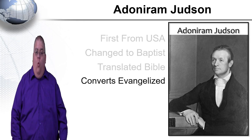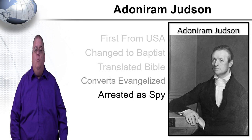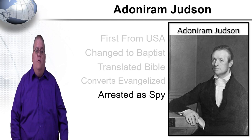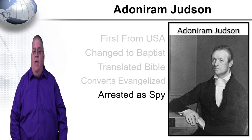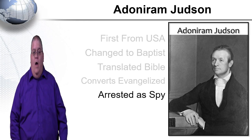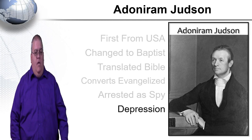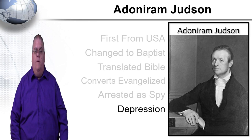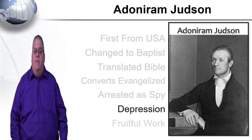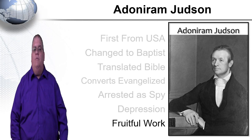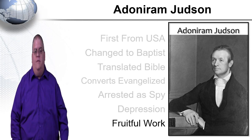Judson translated the Bible, and the first converts took an active role in evangelism, so the church grew. Later, when war broke out between England and Burma, Judson was arrested and tortured as a spy. After years he was released and returned to missionary work. Then his wife died, sending him into severe depression and mental illness. But when he recovered, he returned again to missionary work. At his death, there were around 100 churches and 8,000 believers in Burma, and the result of their work continues there to this day.